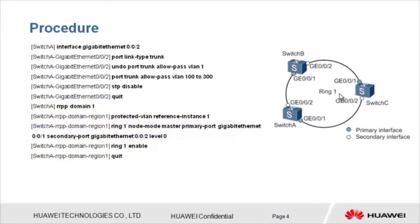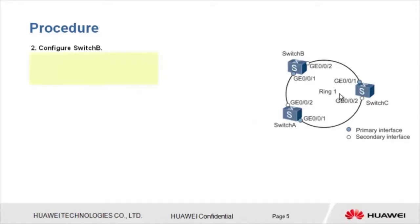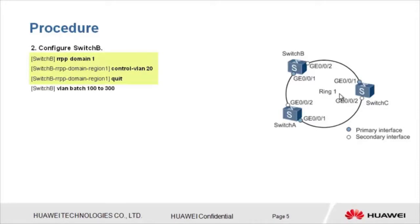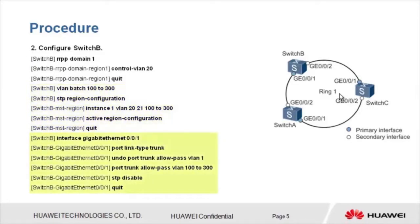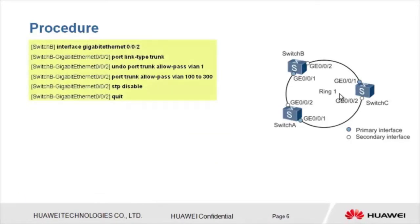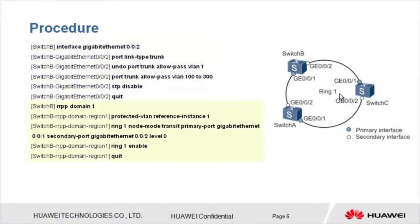Secondly, configure Switch B. Create RRPP domain 1 and control VLAN 20. Create allowed data VLANs 100 to 300. Map instance 1 to control VLANs 20 and 21 and data VLANs 100 to 300. Configure GE001 and GE002 as trunk interfaces, allowing VLANs 100 to 300 to pass through, and disable STP on both. Specify a protected VLAN, create and enable an RRPP ring, and enable RRPP.